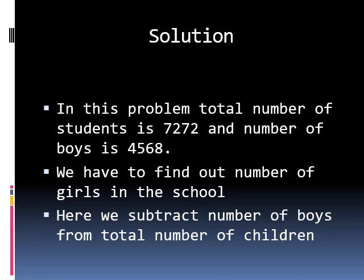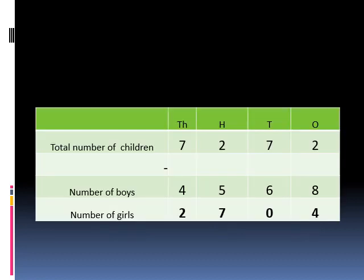In this problem, total number of students is 7,272 and number of boys is 4,568. Here, we have to subtract number of boys from total number of children. Let's start subtracting from one's place.